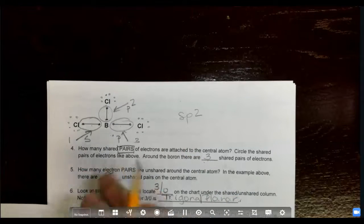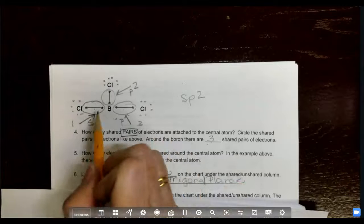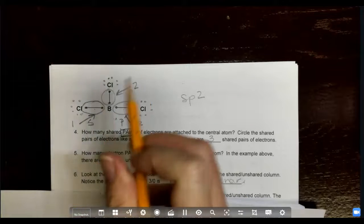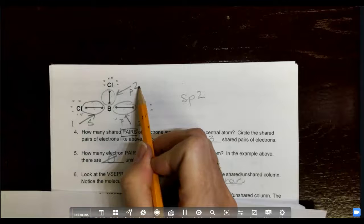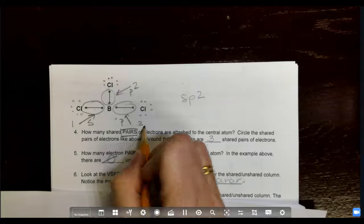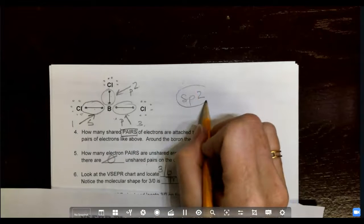here. All right, so this first pair goes in the s, the second pair goes in a p, the second pair goes in a p, and the third pair goes in a p. That's why he's sp2.